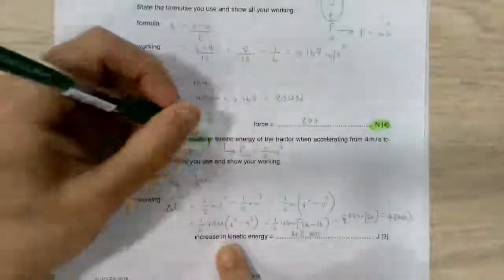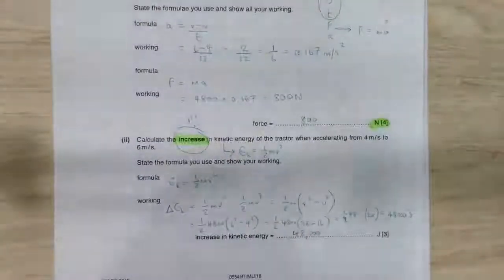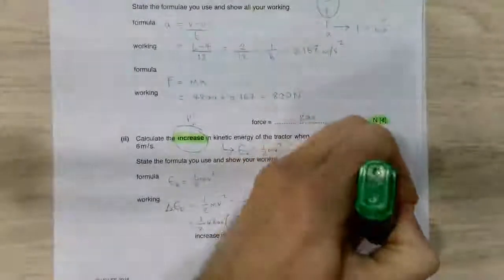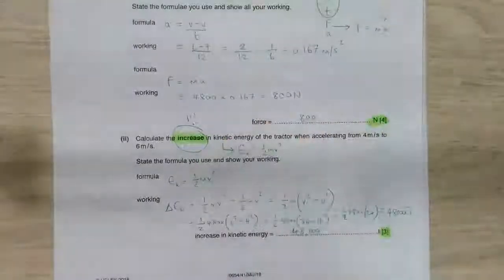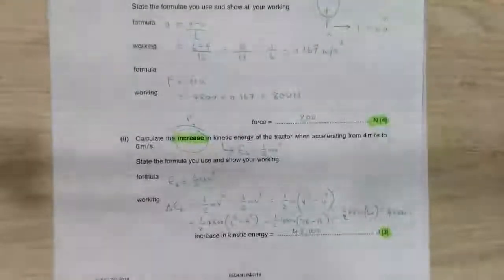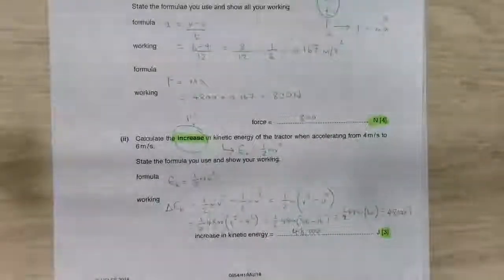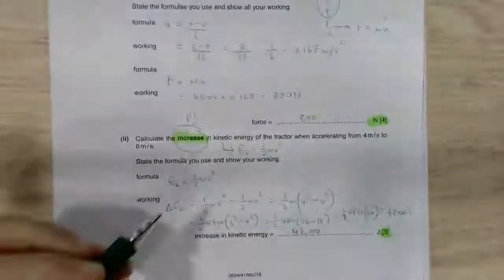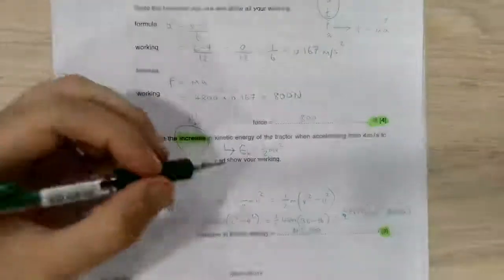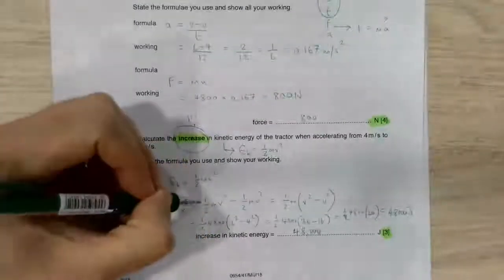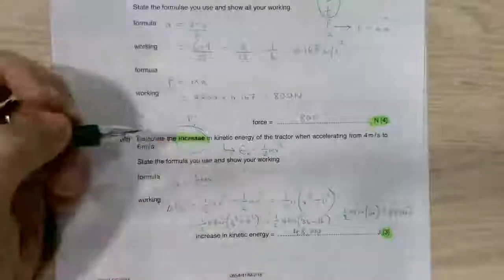Key thing to do really is to look at the number of marks. You'll notice down here there's three marks. There's a reason it's three marks. It's because we're not simply being asked to calculate the kinetic energy. We're being asked to calculate the increase. In other words, you're being asked to find the initial kinetic energy. That's over here. The final kinetic energy and find the difference.